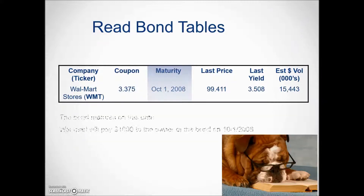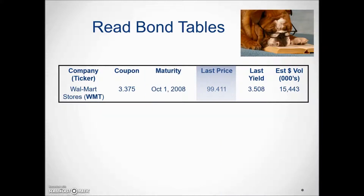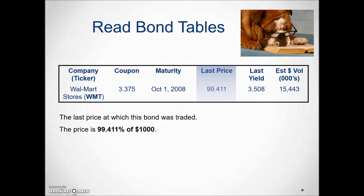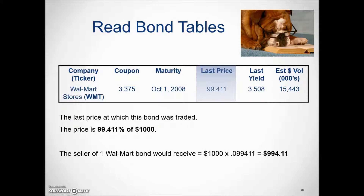The next column is maturity — this is the date that the bond matures, at which time Walmart must pay it off. The next column is the last price at which the bond was traded, expressed as a percentage of $1,000. So $1,000 times this percentage shows us how much would be received for this $1,000 bond.